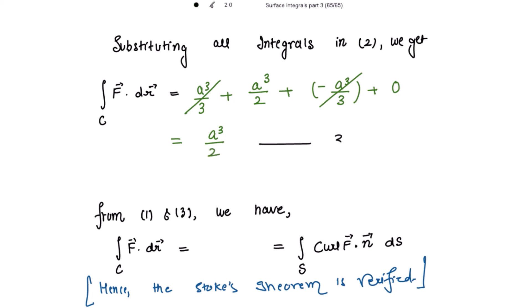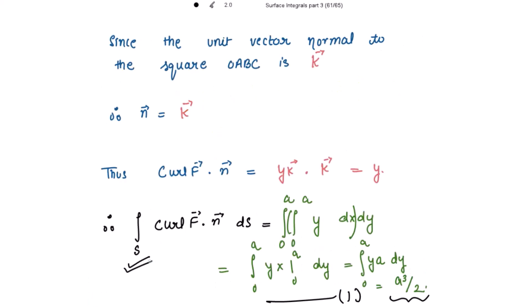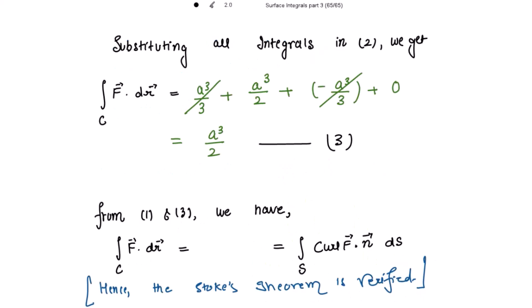From equations 1 and 3: equation 1 gives the right-hand side surface integral equal to a³/2, and equation 3 gives the left-hand side line integral also equal to a³/2. Both integrals are equal, hence the Stokes theorem is verified.